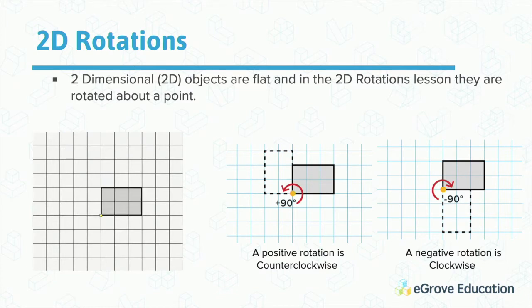This slide shows that a positive rotation is counterclockwise. If you want to rotate 90 degrees counterclockwise, that would be a positive rotation and represented by plus 90.